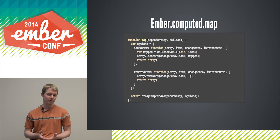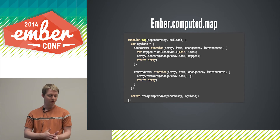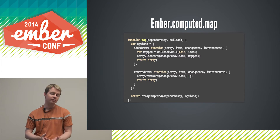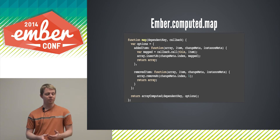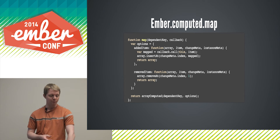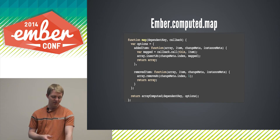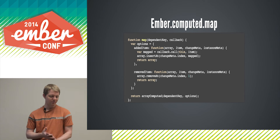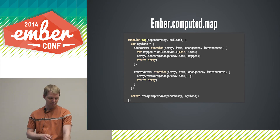Here is the entire implementation of Ember.computed.map straight from the Ember source code. It's fairly straightforward — mostly defined in terms of addedItem and removedItem callbacks, and they're pretty simple. Most of the real work is being done in arrayComputed — all of the observer management is done upstream.